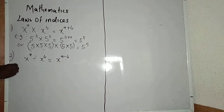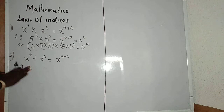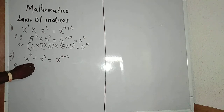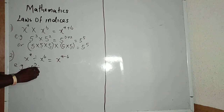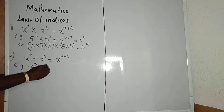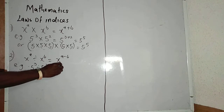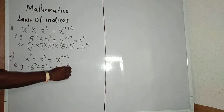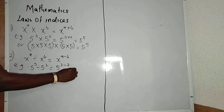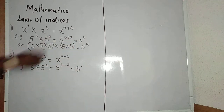Example: if I have 5 raised to power 3 divided by 5 raised to power 2, it will be equal to 5 raised to power 3 minus 2, which is 5 raised to power 1.